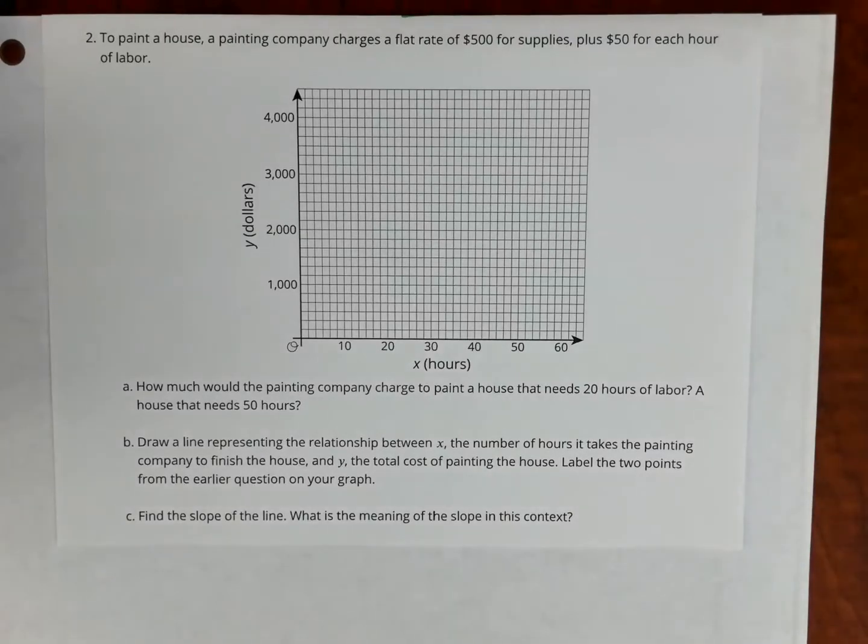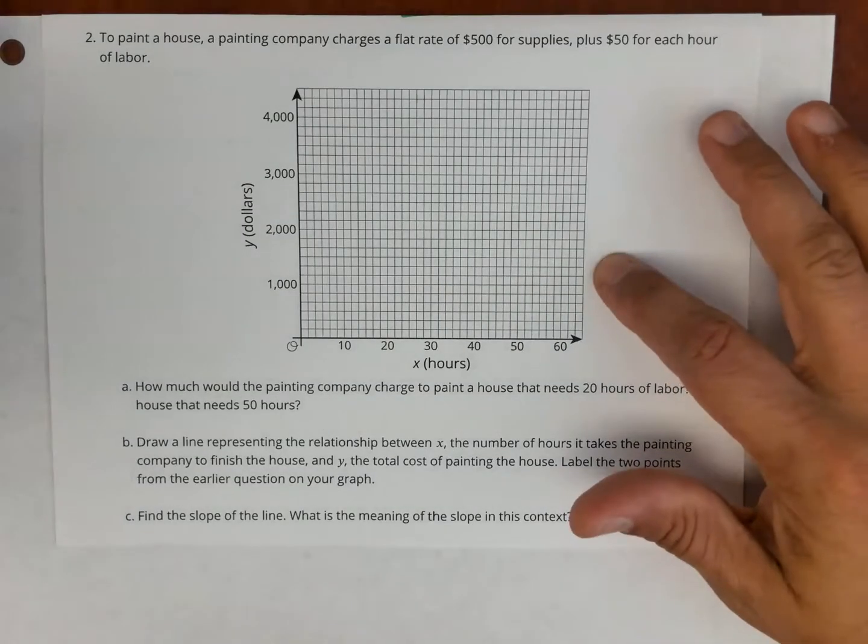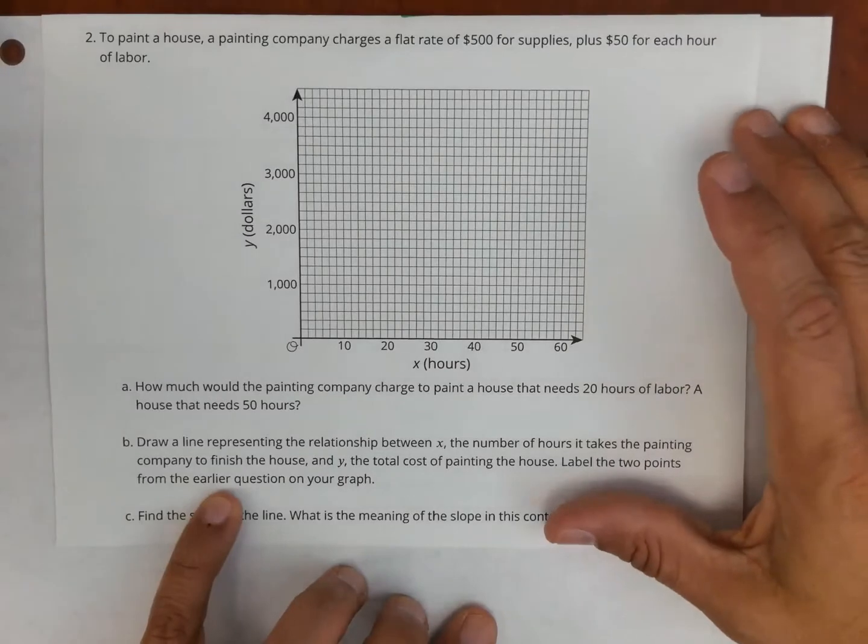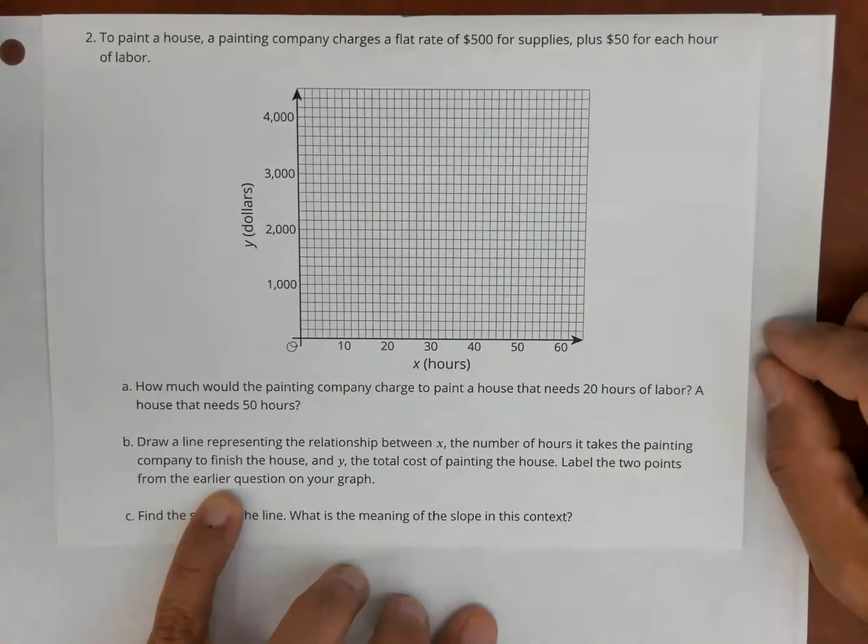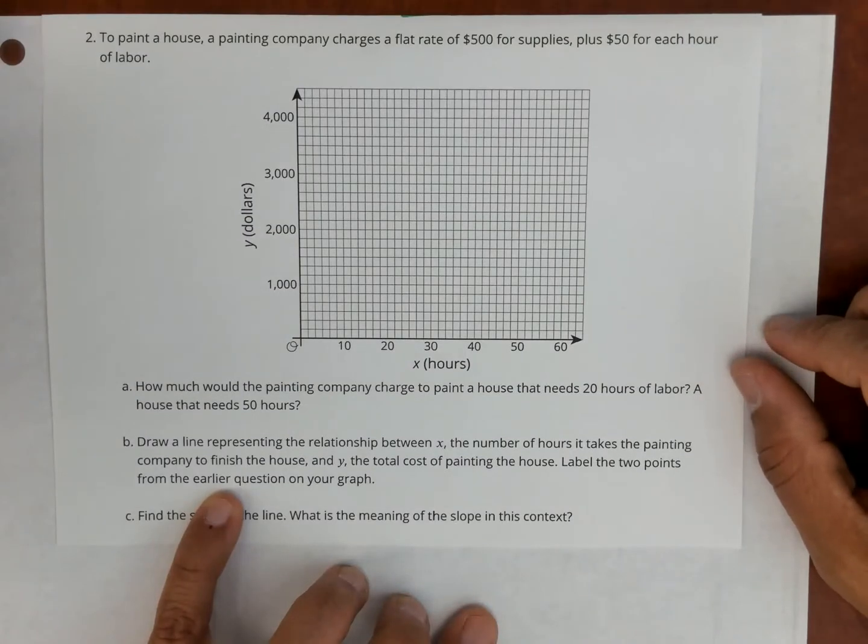Alright, ladies and gentlemen, here we are going to go over practice problem number two from Unit 3, Lesson 5. So let's first start by reading the problem. To paint a house, a painting company charges a flat rate of $500 for supplies plus $50 for each hour of labor. Here we have a graph. Question A, how much would the painting company charge to paint a house that needs 20 hours of labor? A house that needs 50 hours of labor?